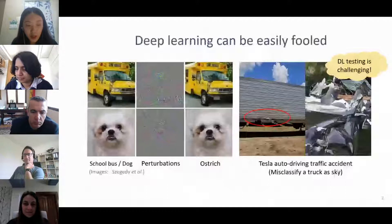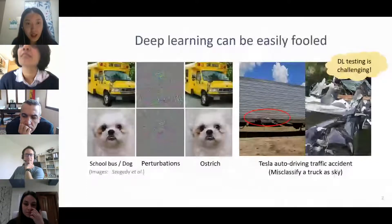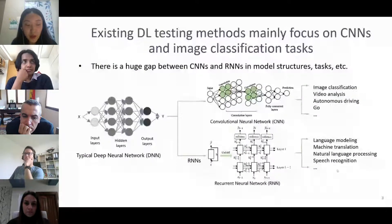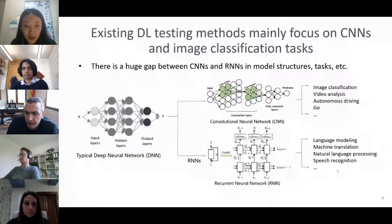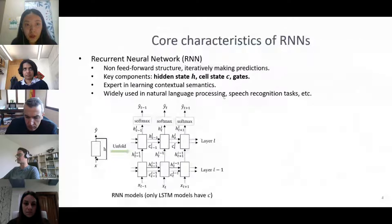As we all know, deep learning can be easily fooled, just like adversarial examples. Deep learning testing is quite challenging. Existing testing methods mainly focus on CNNs and image classification. There are huge gaps between CNNs and RNNs in model structures, tasks, and other aspects, so testing methods and coverage criteria for CNNs are hard to adapt for RNNs.